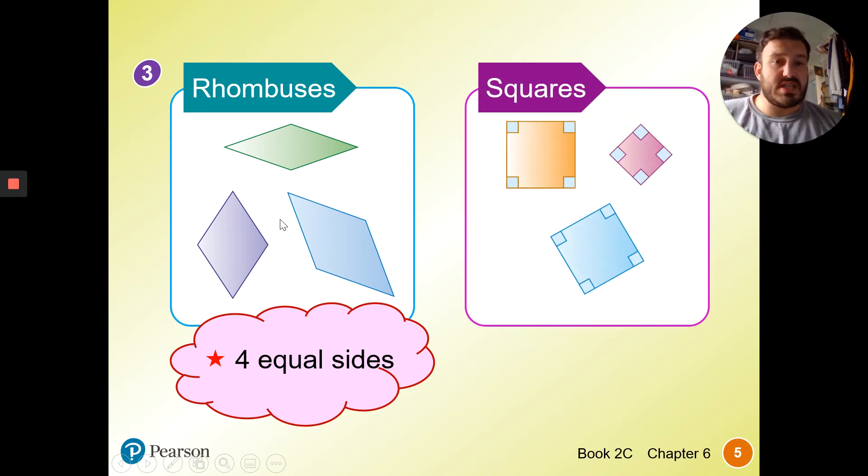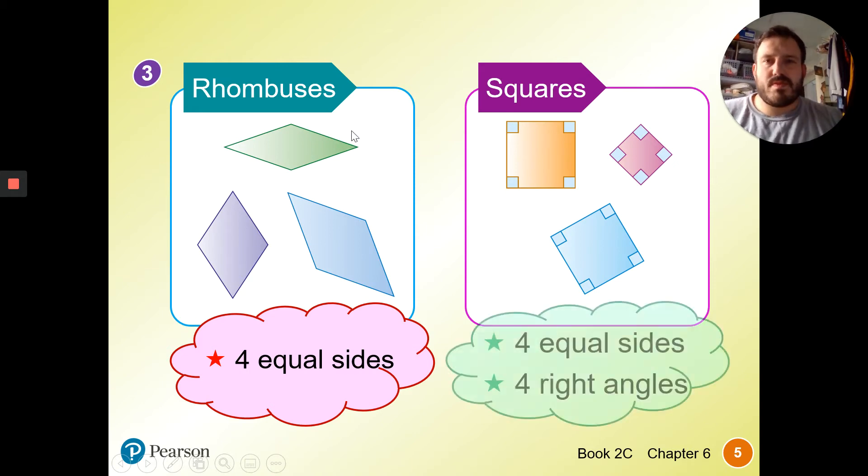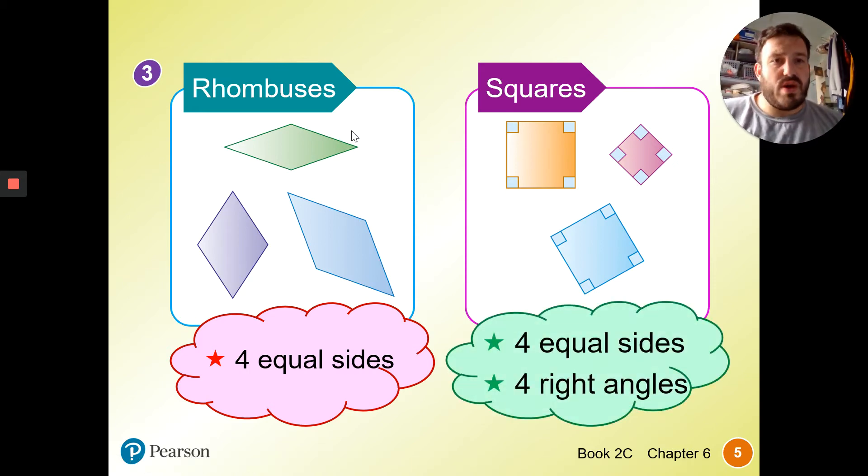Four equal sides, the same as squares. The only difference is the angles. So the difference between a square and a rhombus is the square has four equal sides and four right angles.